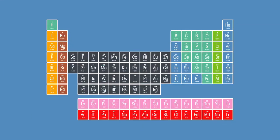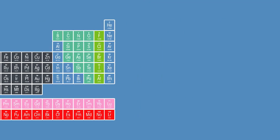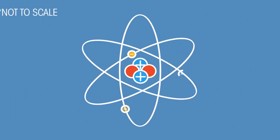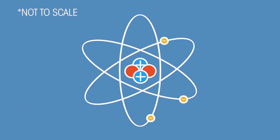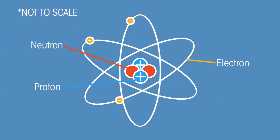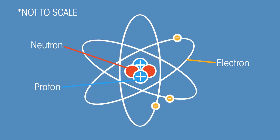The periodic table divides the world into just over 100 elements, sorted by their chemical properties. But did you know that each kind of atom is made up of a different combination of just three subatomic particles? Everything around you is made from just three ingredients.